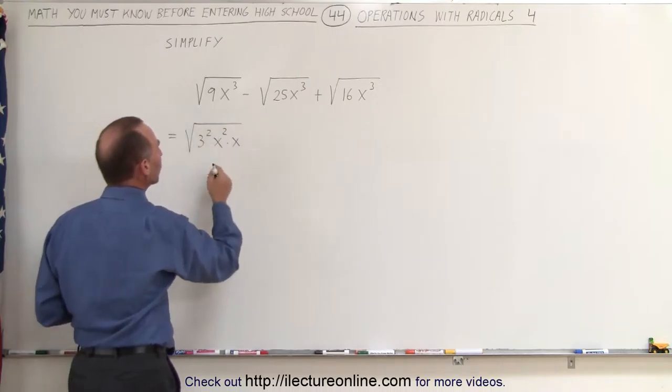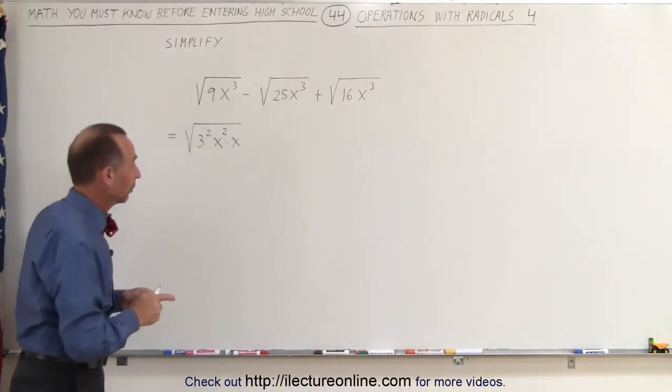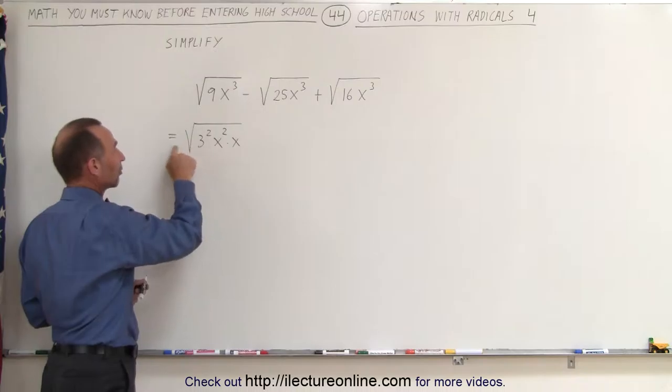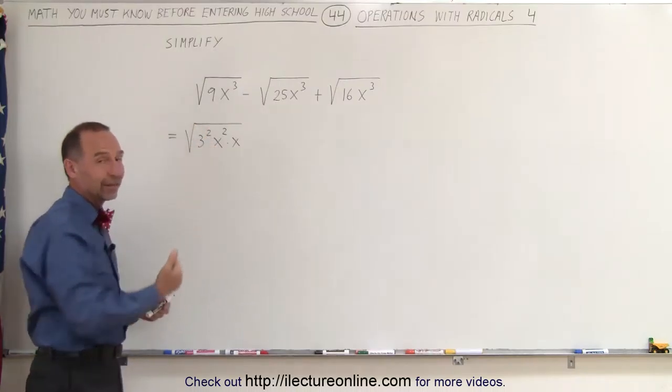Remember, anything underneath the square root can be taken out if it's squared. In other words, the square root of 3 squared is 3, and the square root of x squared is simply x.